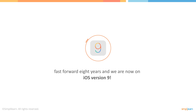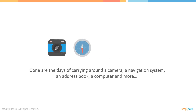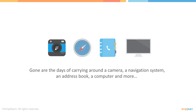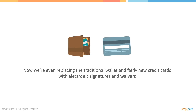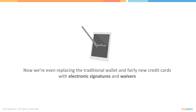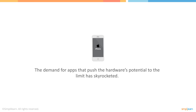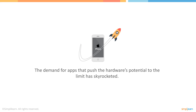Throughout those years, thousands of improvements have been made to the operating system, allowing the devices that run on it to replace more and more gadgets. Gone are the days of carrying around a camera, a navigation system, an address book, a computer, and more. Now we're even replacing the traditional wallet and fairly new credit cards with electronic signatures and waivers. Almost anything can be done with these devices in iOS 9, and the demand for apps that push the hardware's potential to the limit has skyrocketed.